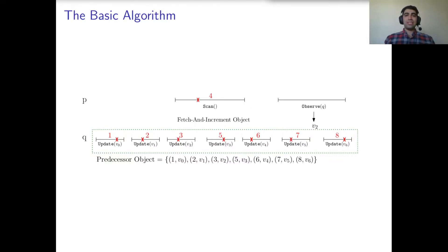Whenever process q performs an update(v) operation, after it fetches number x from the fetch-and-increment object, it inserts pair (x, v) to a predecessor object. For example, in this execution, the predecessor object of q has pairs (1, v0), (2, v1), and so on. So in the observe operation by process p, first p sees that the assigned number to its preceding scan is 4. Then it searches through the predecessor object of q to find the predecessor of number 4 — the largest pair with key less than 4. In our example, this pair is (3, v2). Therefore, p returns v2 in the observe operation.